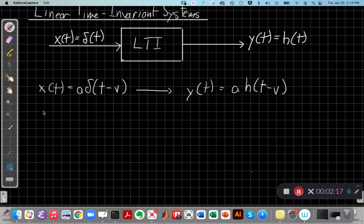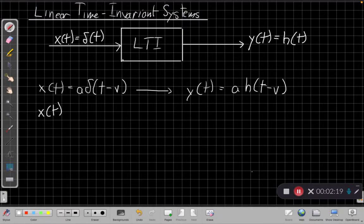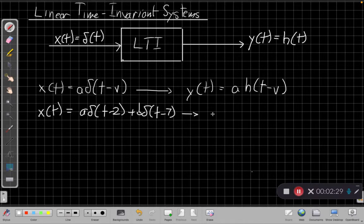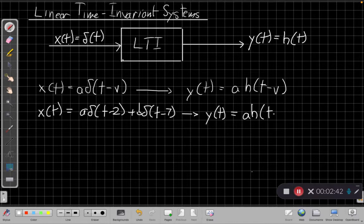If I add two of these, maybe A times delta of T minus 2 and B times delta of T minus 7, then we know from linearity and time invariant properties that I would shift H of T the same way, scale it the same way, and then add the two of them from the superposition property. So my output would be A times H of T minus 2 plus B times H of T minus 7.